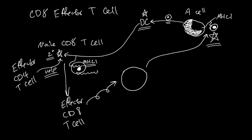With the secondary stimulation at the cell with the problem, the effector CD8 T cell will now become a cytotoxic T cell. This cytotoxic T cell will hold on to the problematic cell and release a lot of granules towards the target cell.